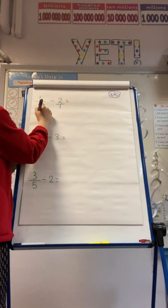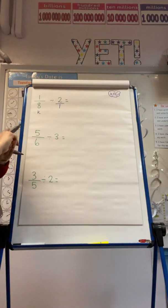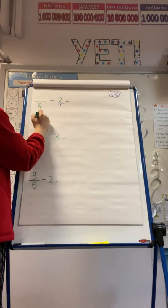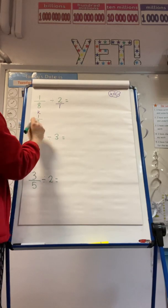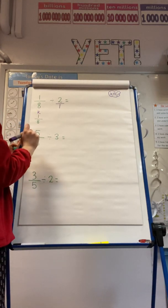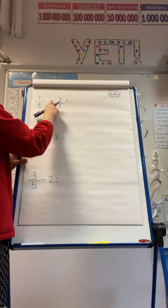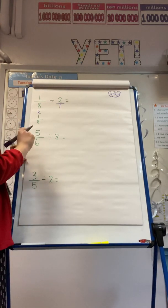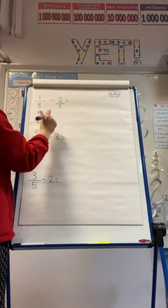So the first thing I'm going to do is keep. And you always keep the original fraction, which in this case is 1 eighth. I then change the operation that I'm doing. And I'm going to use the inverse of division, which I know is multiplication.